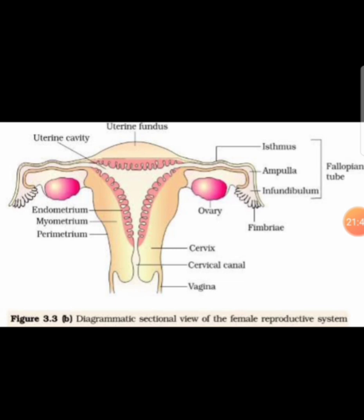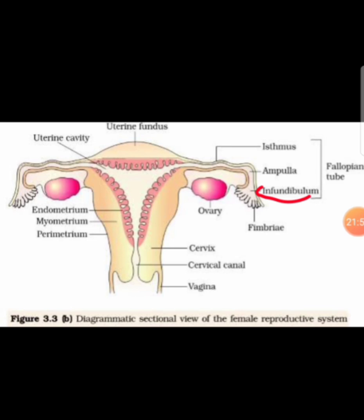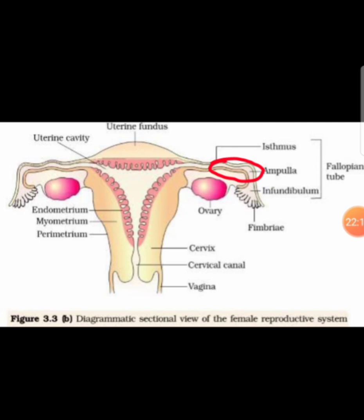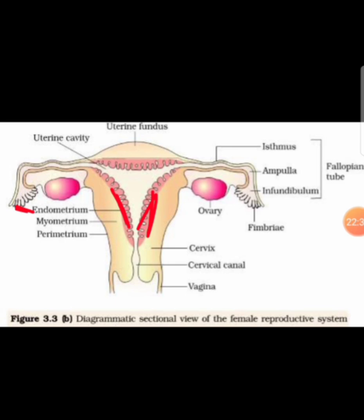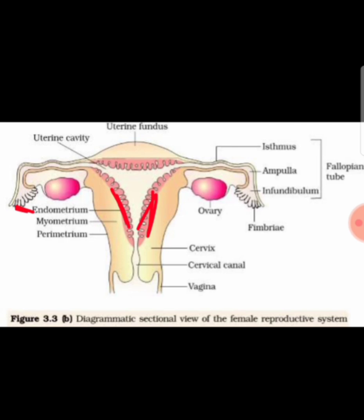In the structure of the female reproductive organ, in the fallopian tube, the part near the ovary is the funnel-shaped infundibulum, which has many finger-like projections called fimbriae that collect the egg from the ovary. The wider part after the infundibulum is the ampulla, followed by the isthmus. Fertilization occurs at the ampullary-isthmic junction. In the uterus, there are three layers: perimetrium, myometrium, and endometrium. The endometrium undergoes cyclic changes every month, involving the menstrual cycle, and the myometrium undergoes contraction during parturition.